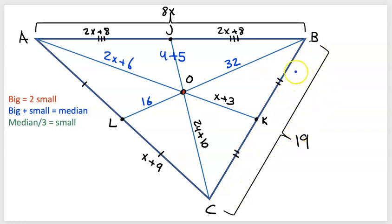Looks like the entire length from B to C is 19, which means each of these BK's and KC's would be half of 19. I think that's just 9.5. Let's keep working our way around. LC is x plus 9, which means AL would also be x plus 9.